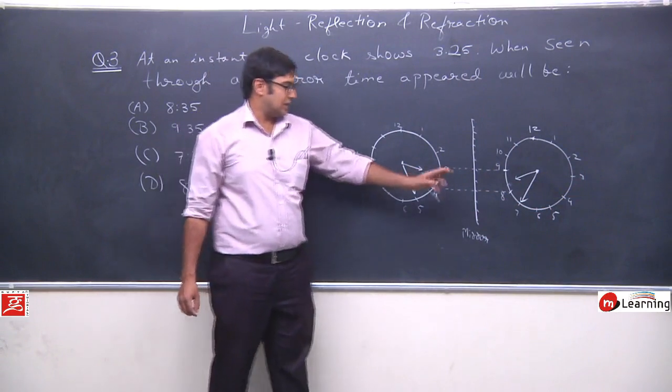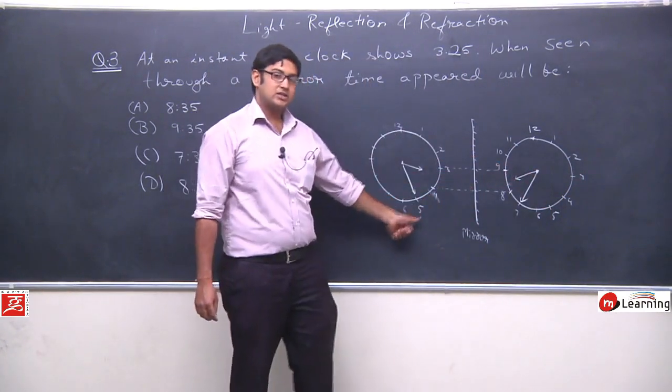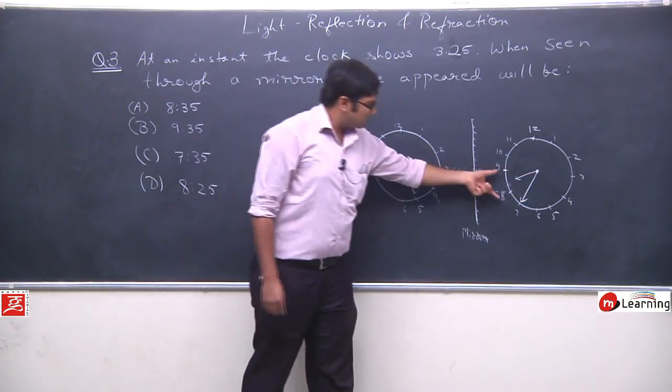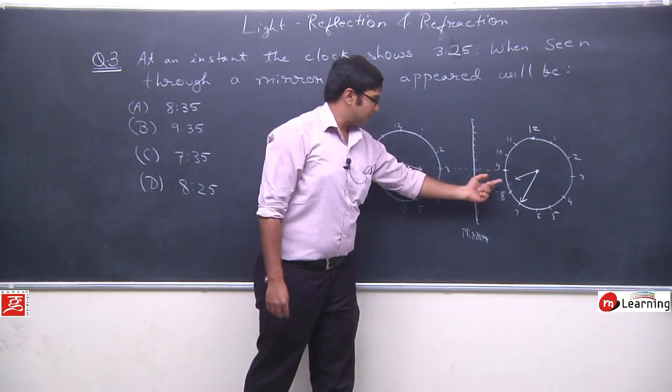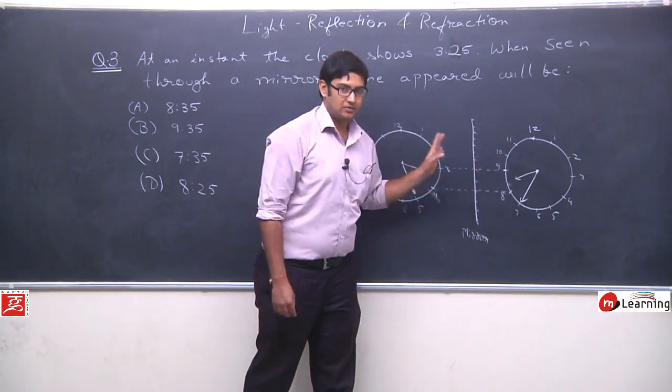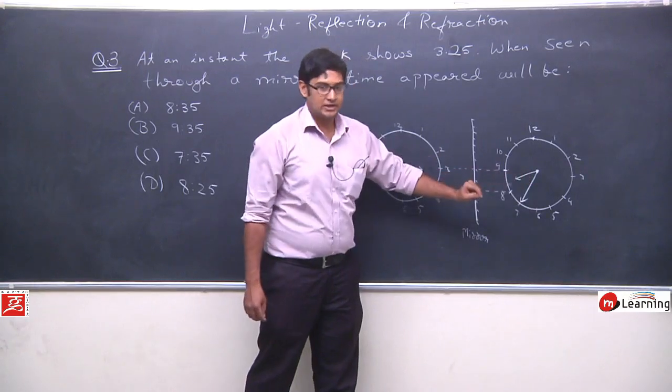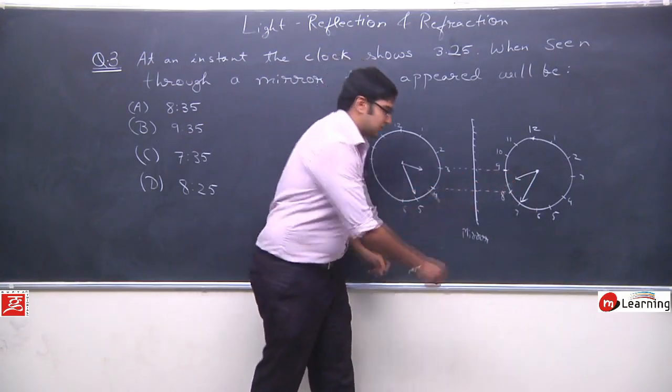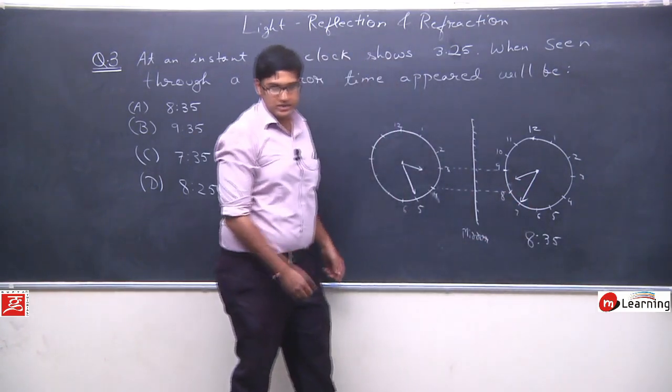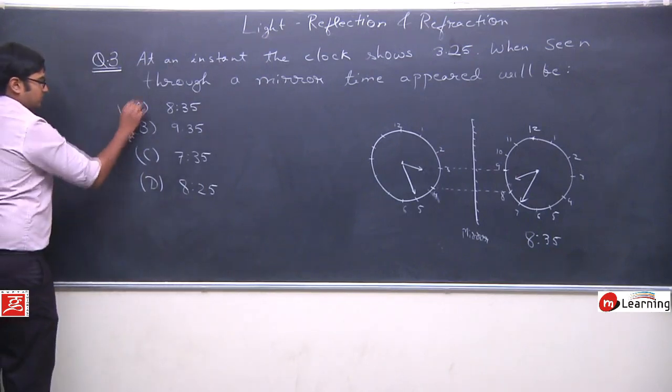So, we can see. We see that the minute hand, which is at 5, is now at 7. And the hour hand, which is between 3 and 4, is now between 7 and 8. So, it means, what is the time? It is more than 8 and less than 9. We can see this. And minute hand is at 7 means 35 minutes. So, it is 8 hours and 35 minutes. So, correct answer is option A.